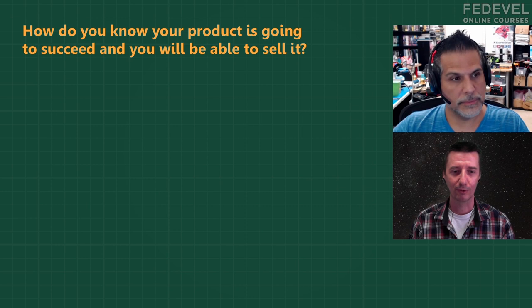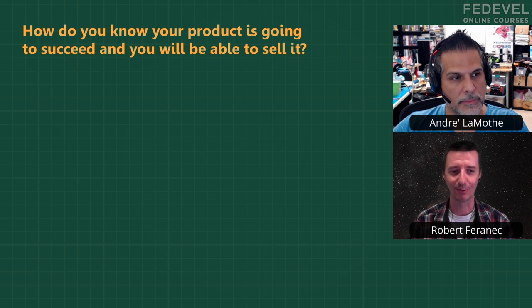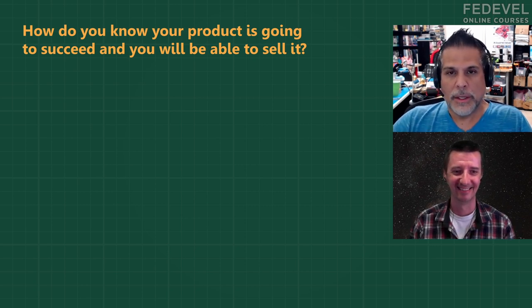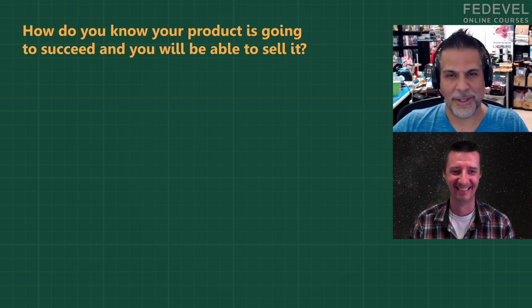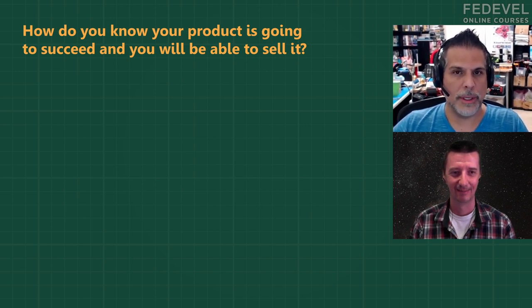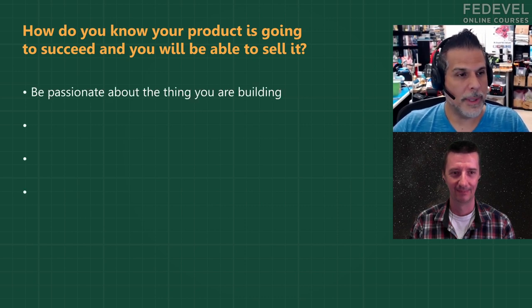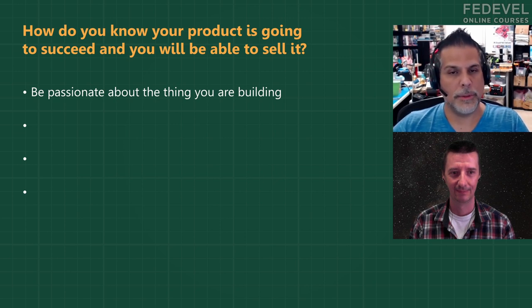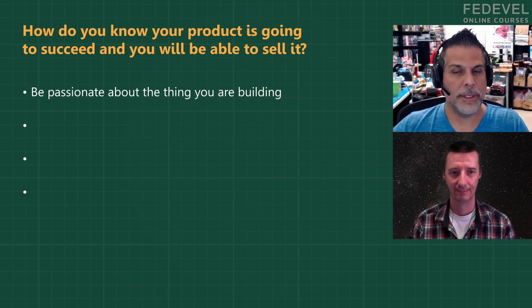Here is my very first question to André: How do you know your project or product is going to be cool and you'll be able to sell it? That's the million or billion dollar question. When you're going to design any kind of product, there are two important things. One is that it's something you're passionate about — you can't let other people decide what you should build. Then you have to look at categories you're interested in and go out in the marketplace and see what's available.